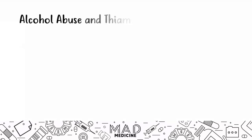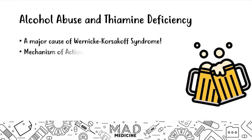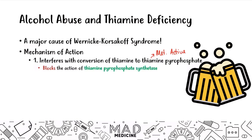Alcohol is a major cause of Wernicke-Korsakoff syndrome through three mechanisms involving thiamine. First, alcohol interferes with the conversion of thiamine to thiamine pyrophosphate — the metabolically active form — by blocking the enzyme thiamine pyrophosphate synthetase. By blocking that enzyme, you decrease the metabolic activation of thiamine pyrophosphate.